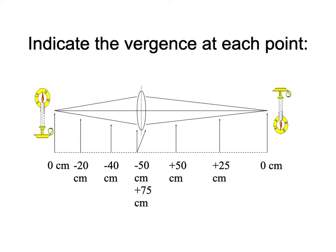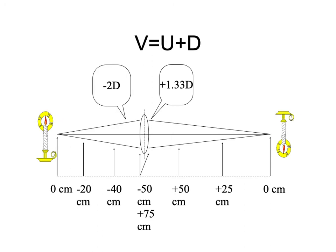What is the vergence of the rays of light just as they're about to enter the lens? They converge half a meter to the left — half a meter means an absolute vergence of 2, to the left means minus, so it's minus 2. What about the vergence just as they exit the lens? They converge to the right, 75 centimeters or 0.75 meters, and one over that is 1.33 — because it's to the right, it's plus 1.33. So if vergence coming into the lens was minus 2 and coming out was plus 1.33, the contribution of the lens is plus 3.33.